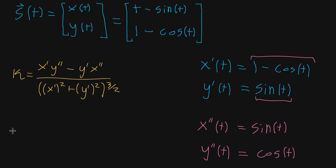So now, when we just plug those four values in for kappa, for our curvature, what we get is x prime was one minus cosine of t.